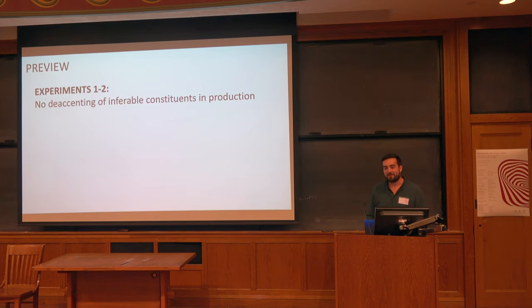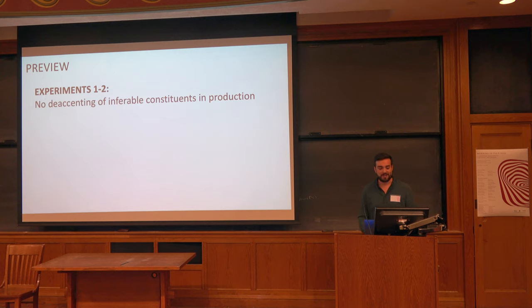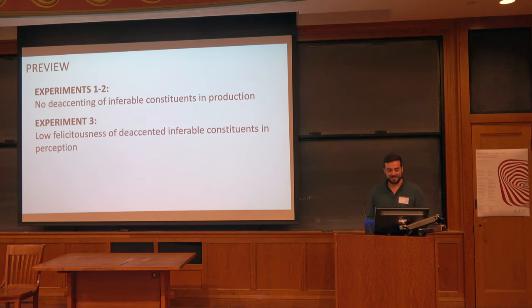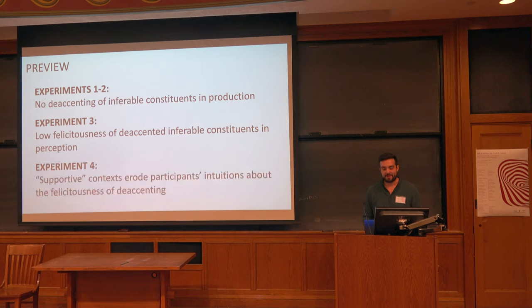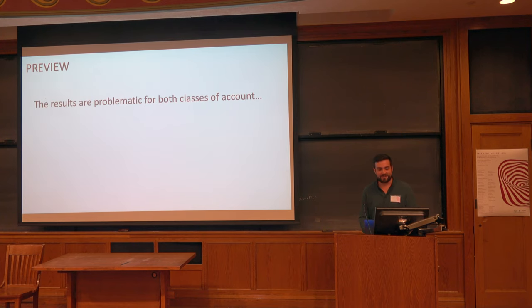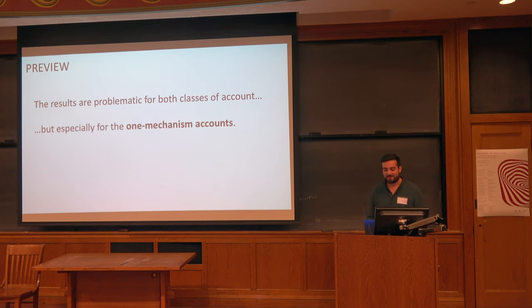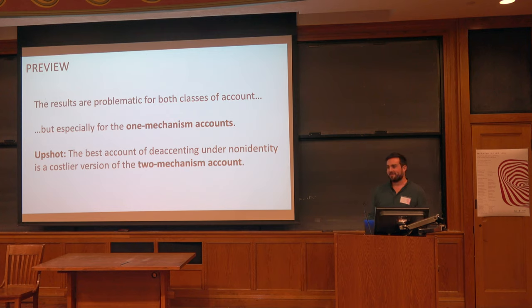To quickly preview what I'm going to do: I'll present four experiments, though I only have 20 minutes so I'll give less detail. In experiments one and two, we look at production, and I'll show we found no evidence that speakers de-accented inferable constituents — which was demoralizing initially but turned out to be interesting. In experiment three, a perception study showed that people didn't think de-accented inferable constituents sounded good. And in experiment four, a revised perception study suggests people have really poor intuitions about what prosody should be doing in context. The results are problematic for both accounts but extra problematic for the one-mechanism accounts, so I'll recommend something like an even costlier version of the pragmatically-mediated two-mechanism account.